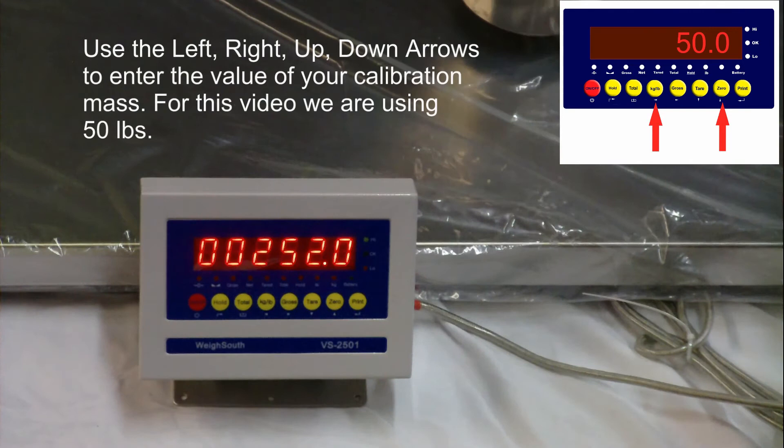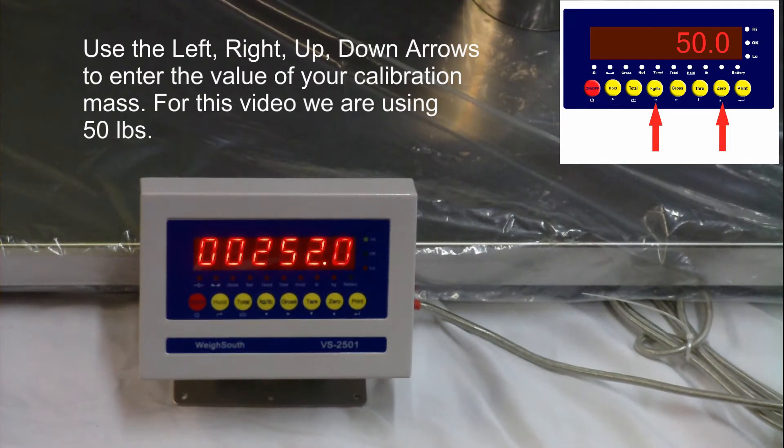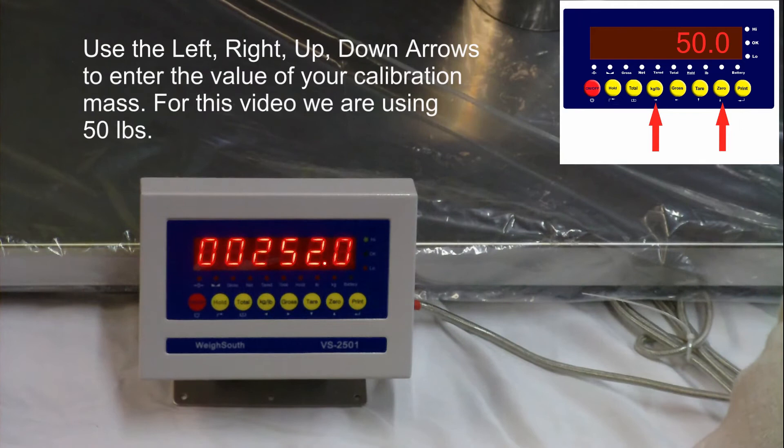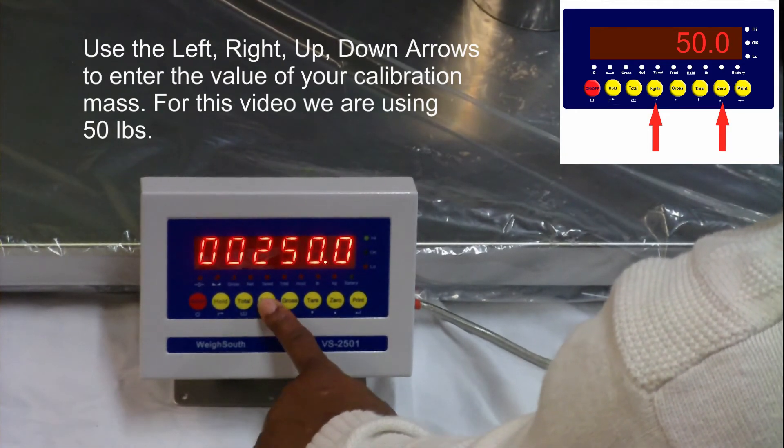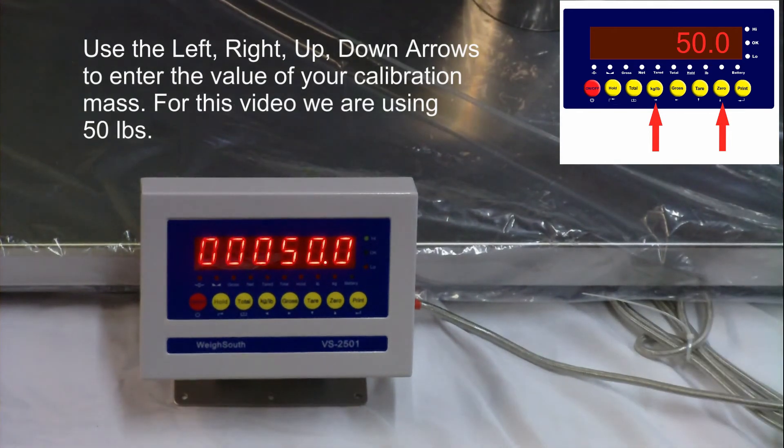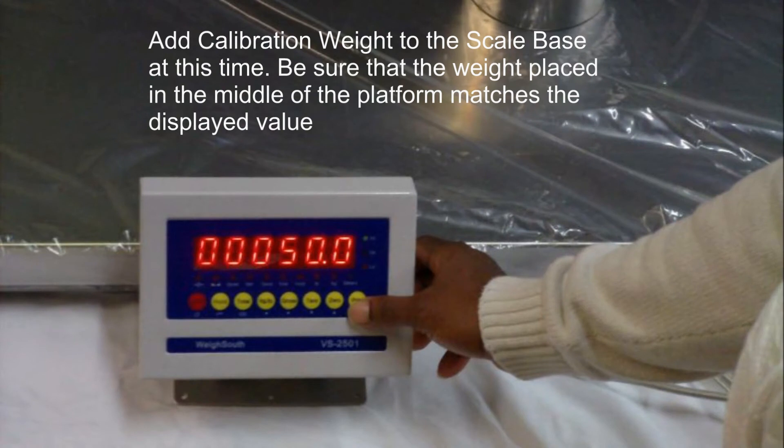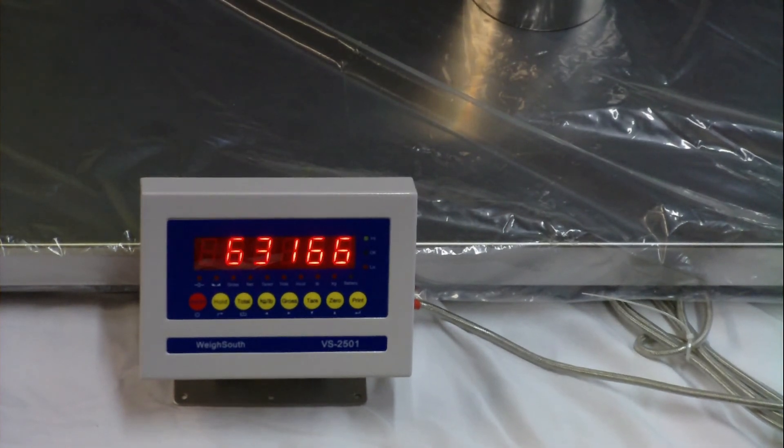At this time, use the kg pound key to enter the value of the calibration mass that you are going to use for calibration. In this video, we are going to use 50 pounds as a reference weight. So using the arrow keys, enter the value as 50. Once the calibration value matches your calibration weight, place the calibration mass on the base and press the print key. Your VS2501 will countdown and display cal in.